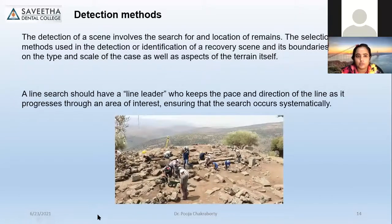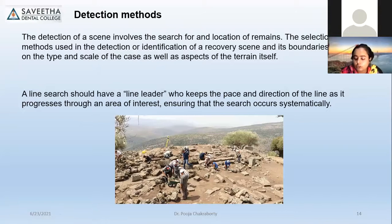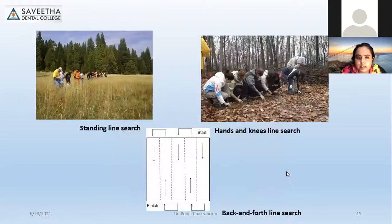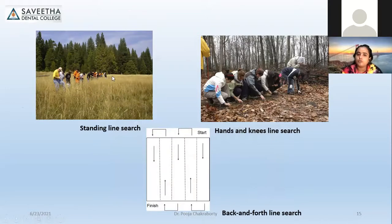The detection method involves the search and location of remains. The selection method must account for large land areas in archaeological contexts. The line search method requires one leader responsible for following the path. We can follow the standing line search, the hands-and-knees line search where you get down and do a thorough search, or the back-and-forth line search where you repeatedly go over the area.